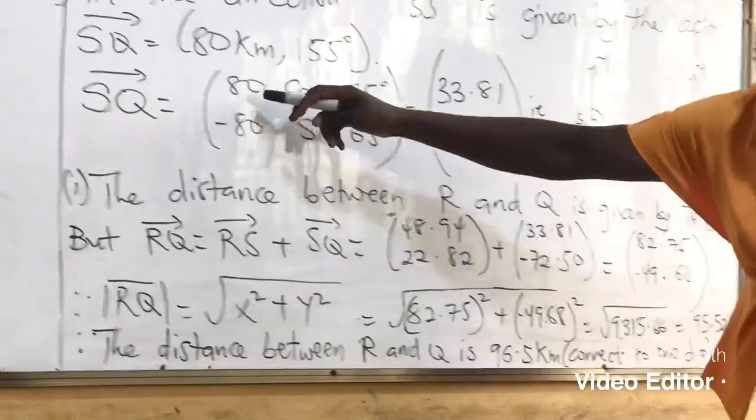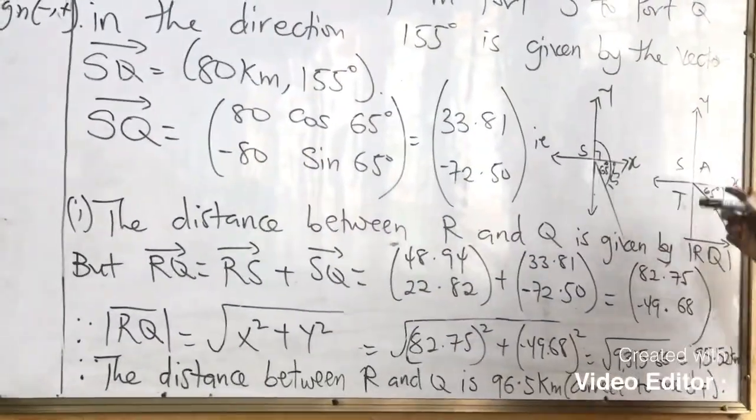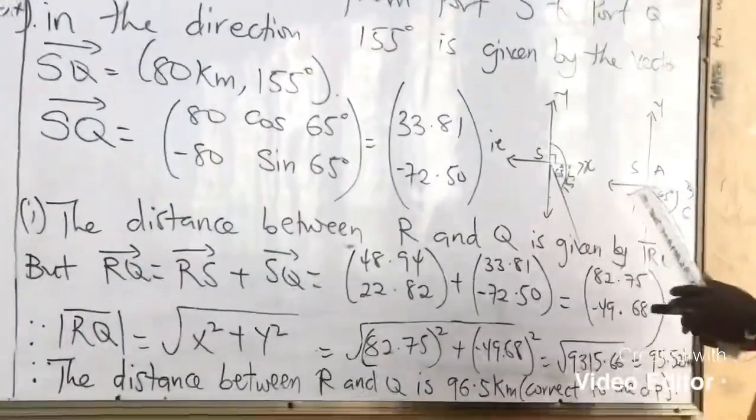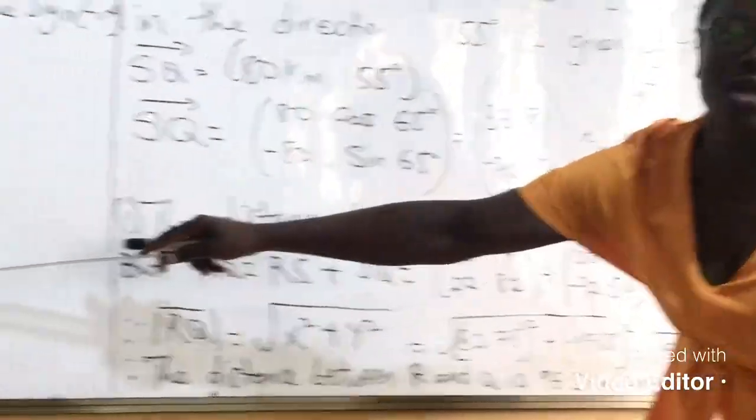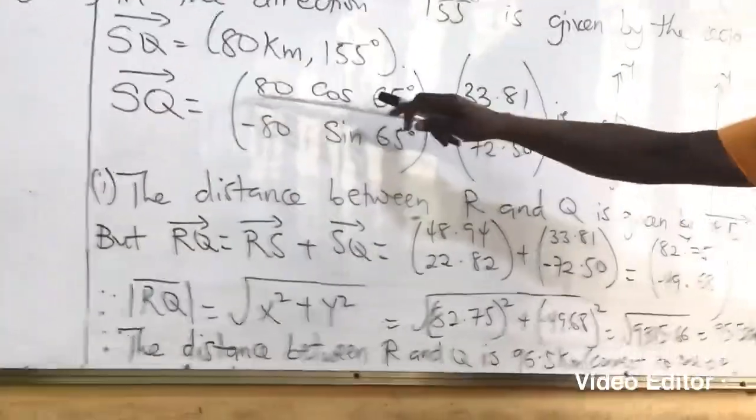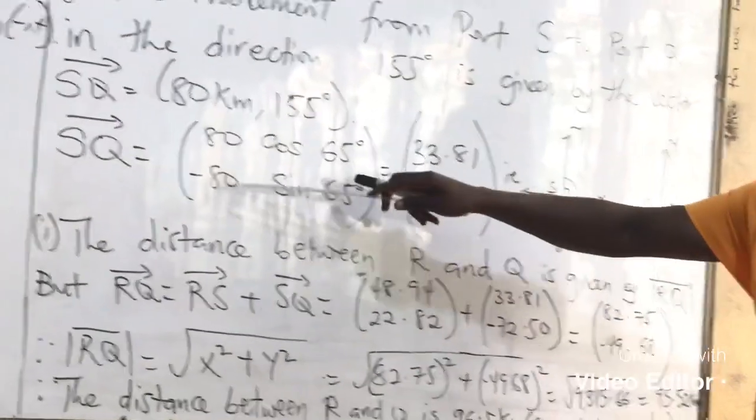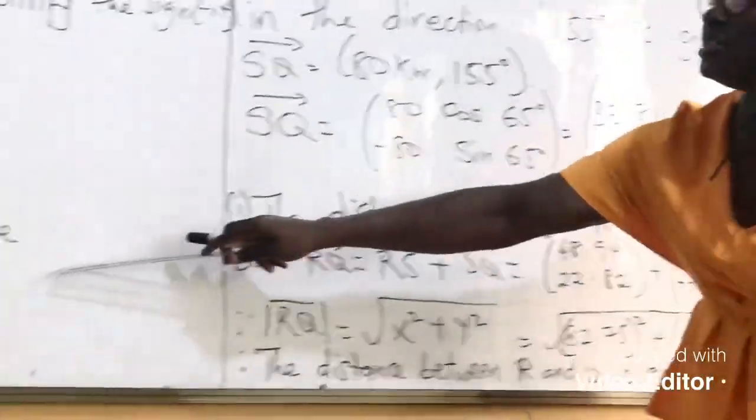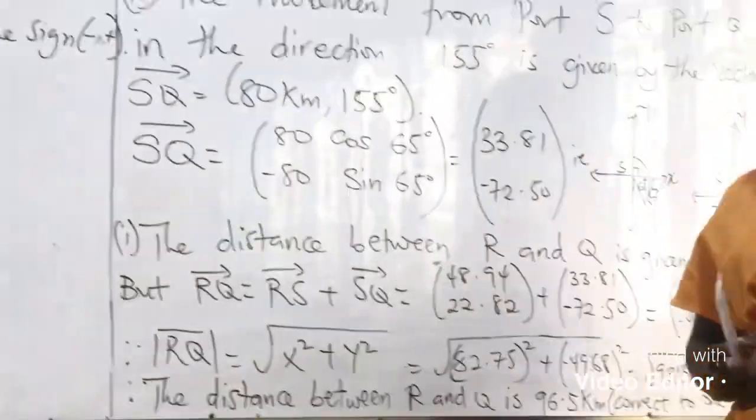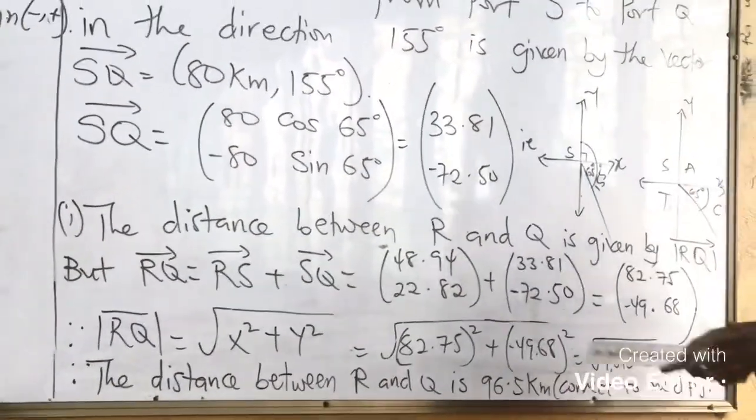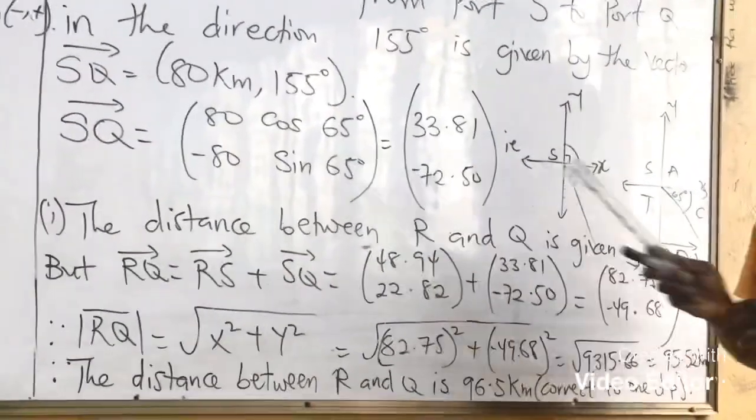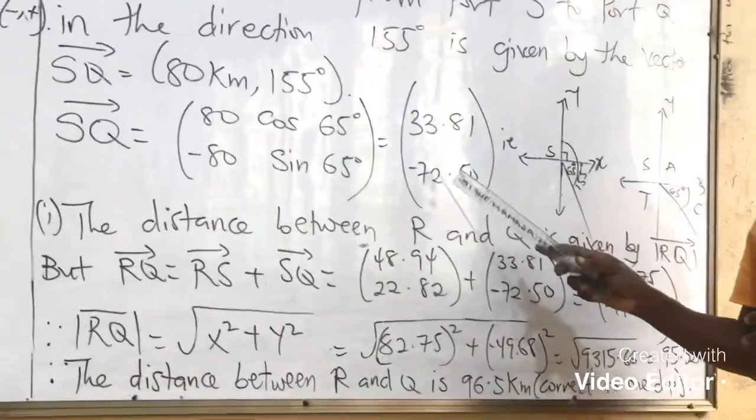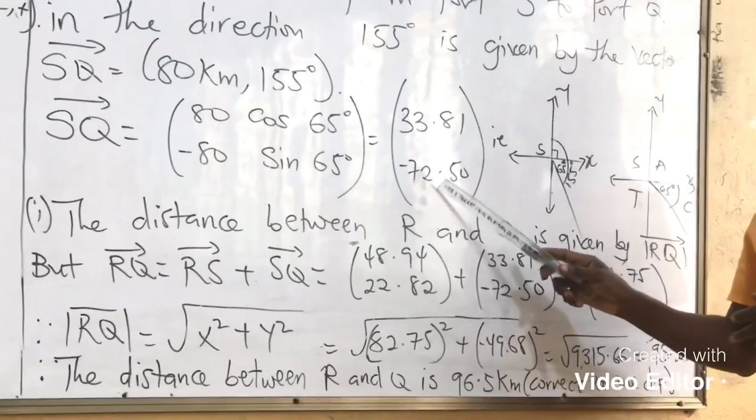How did we come about the negative and the positive here? We again use the CAST rule. So the second quadrant, according to this rule is, only sin is positive. So in this case, that is why cos is getting negative and sin is positive. Modifying the span gave us -33.81 and negative 80 sin 65 is also giving us negative 72.50.